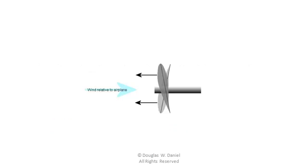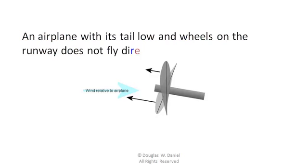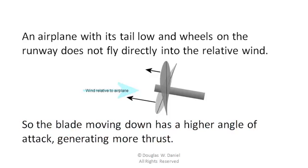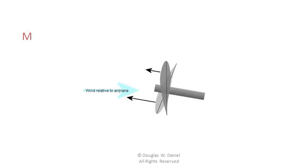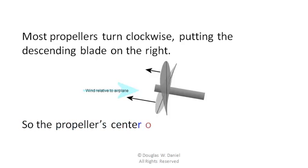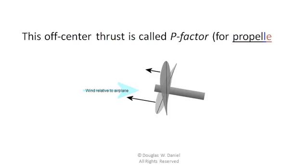An airplane with its tail low and wheels on the runway does not fly directly into the relative wind. So the blade moving down has a higher angle of attack, generating more thrust. Most propellers turn clockwise, putting the descending blade on the right. So the propeller's center of thrust is to the right of the center of the propeller.